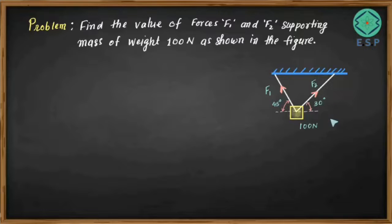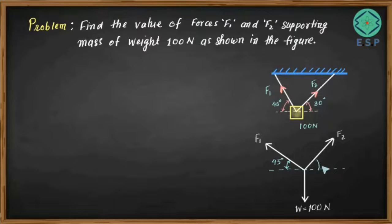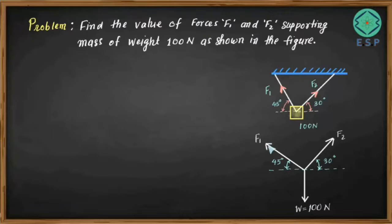First, we draw the free body diagram. We have force F1, force F2, and the weight W = 100 newtons acting downward. The angle between F1 and the horizontal is 45 degrees, and the angle between F2 and the horizontal is 30 degrees. The angle between F1 and W (the vertical) is 45 + 90 = 135 degrees. The angle between F2 and W is 30 + 90 = 120 degrees.